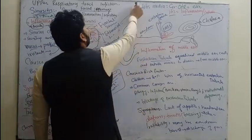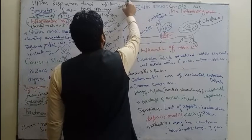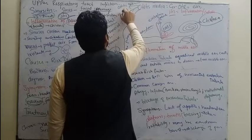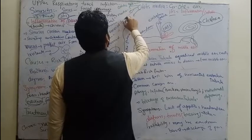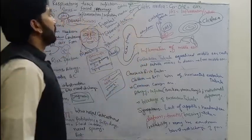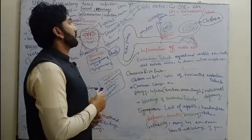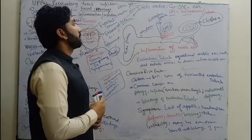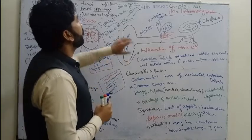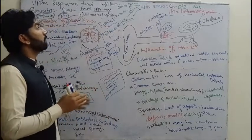The ear has three parts corresponding to otitis: otitis externa (outer ear), otitis media (middle ear), and otitis interna (inner ear). We will focus only on otitis media — the infection of the middle ear.